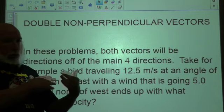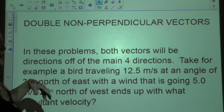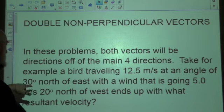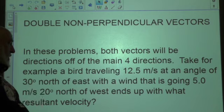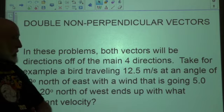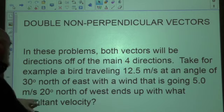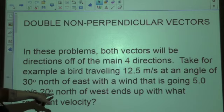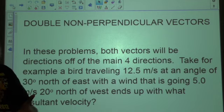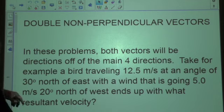So we put all this together, and we'll take this scenario, we'll take our bird again that's going at 12.5 meters per second, only this time it's going 30 degrees north of east. And now we still have that five meter per second wind, only this time it's going to be 20 degrees north of west. And we want to know what resulting velocity our bird is going to end up in.